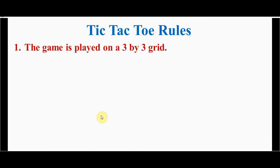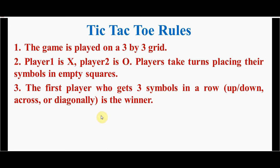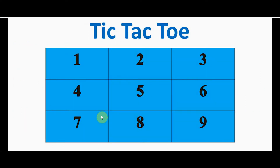The rules for tic-tac-toe: the game is played on a three by three grid — totally nine squares. Player one's symbol is X and player two's is O. Players take turns to place their symbols only in empty squares. The first player who gets three symbols in a row, column, or diagonally is the winner. When all nine squares are full and no player has three marks in a row, the game ends in a tie.